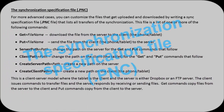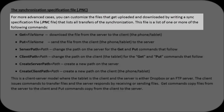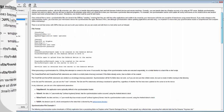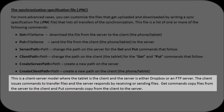For more advanced cases, you can use the synchronization specification file, the .pnc file. Using the .pnc file, you can customize the files that get uploaded and downloaded by writing a sync specification file that lists all transfers of the synchronization. This file contains one or more of the commands shown here. You can also refer to the CS Pro Help to view these commands and their descriptions. This is a client-server model where the tablet is the client and the server is either Dropbox or an FTP server. The client issues commands to transfer files and the server responds by receiving or sending files. Get commands copy files from the server to the client and put commands copy from the client to the server.